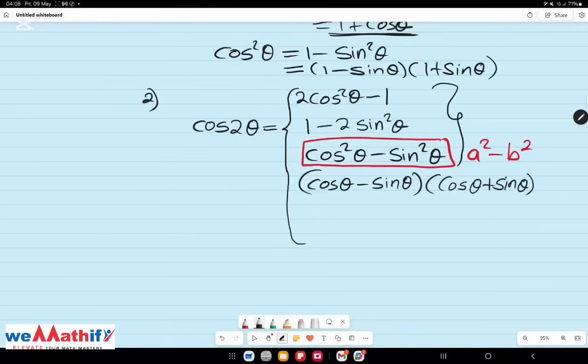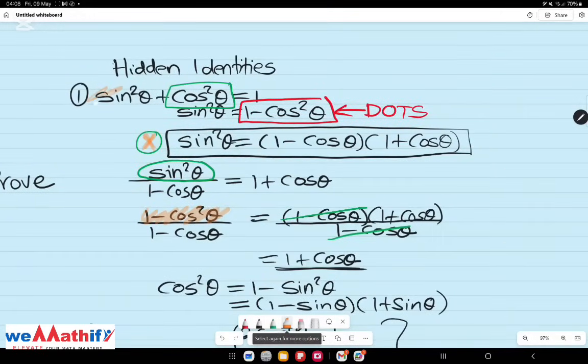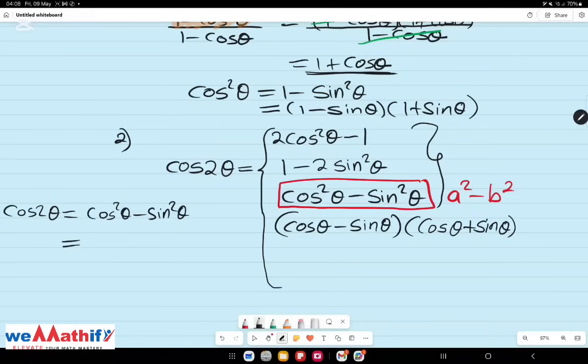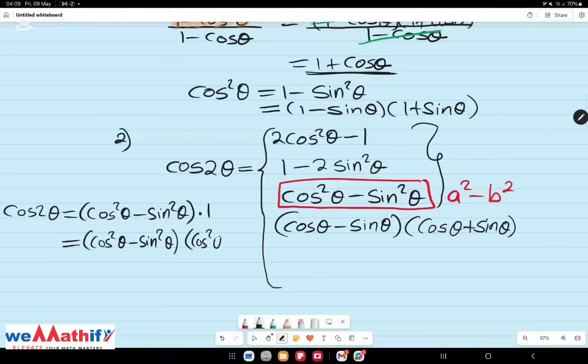Now, I want us to talk about the last identity for cos 2 theta. We know that cos 2 theta is cos squared theta minus sine squared theta. Now, earlier, we spoke about the squared identity. Sine squared theta plus cos squared theta is equal to 1. Let's manipulate this and multiply it by 1. So now, in the next step, we are going to replace this one with cos squared theta plus sine squared theta.